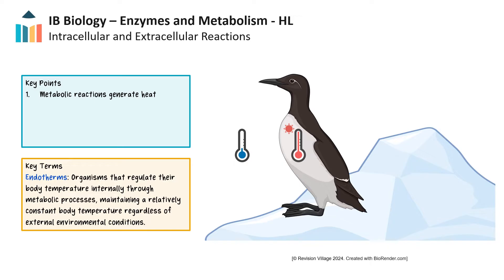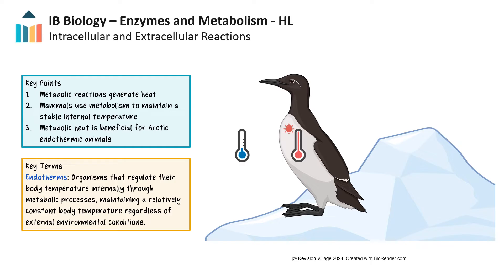Metabolic reactions in the body are not 100% efficient in energy transfer, resulting in the generation of heat. This phenomenon is vital for thermoregulation in mammals, birds, and some other animals that maintain a stable internal temperature. During cellular respiration, some of the energy from nutrient breakdown escapes as heat, which helps sustain body temperature in homeothermic organisms. This metabolic heat generation is especially beneficial in colder environments, allowing even Arctic endothermic animals to remain active despite external temperature fluctuations.